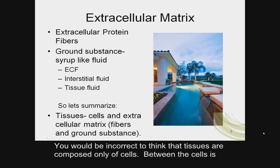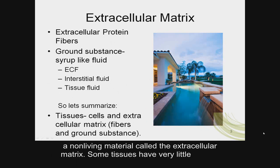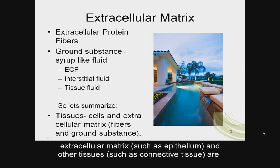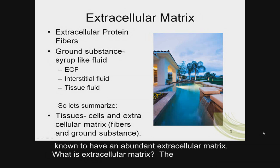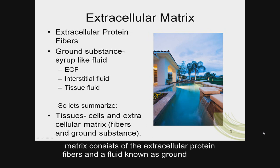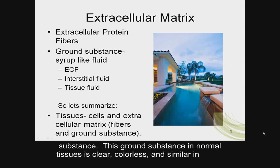You would be incorrect to think that tissues are composed only of cells. Between the cells is a non-living material called the extracellular matrix. Some tissues have very little extracellular matrix, such as epithelium, and other tissues, such as connective tissue, are known to have an abundant extracellular matrix. The matrix consists of extracellular protein fibers and a fluid known as ground substance. This ground substance in normal tissues is clear, colorless, and similar in consistency to a viscous syrup, like maple syrup.